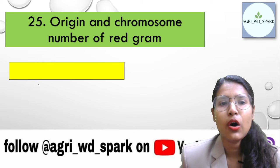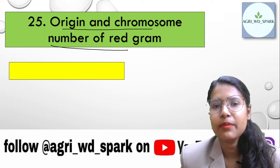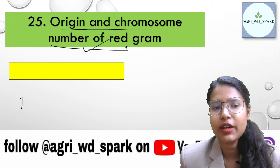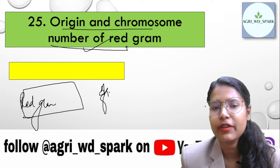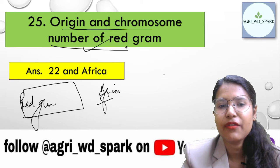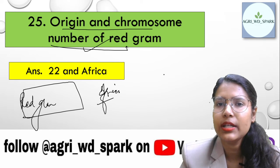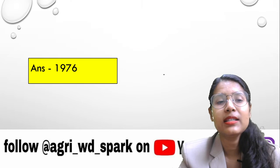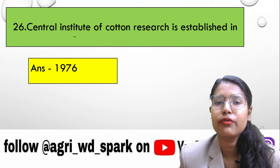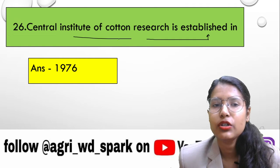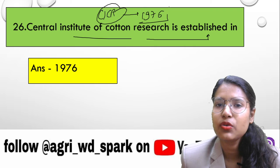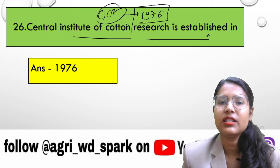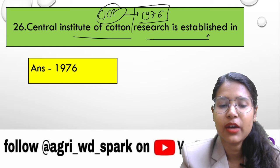The origin of red gram is Africa, along with its chromosome number. The Central Institute of Cotton Research was established in 1976.